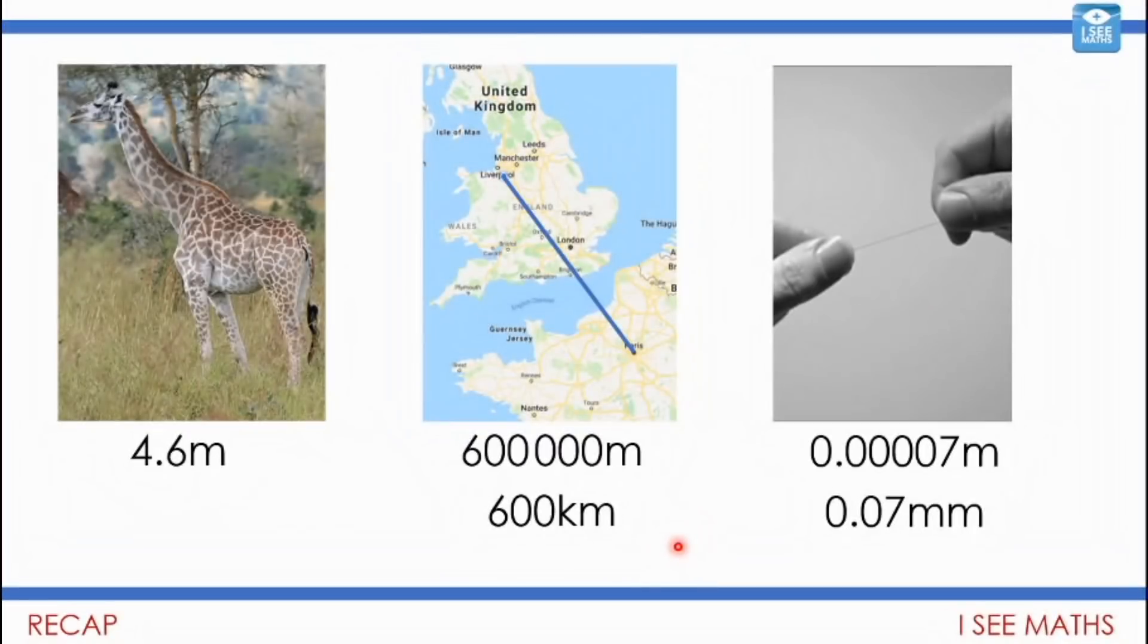So to start off with, just a little bit of a recap from yesterday. We had a look at different things that could be measured. So for example, a giraffe and we were saying 4.6 meters tall. And we were looking at the distance from where I live to Paris, which is 600 kilometers. And we said it's easier to understand that than putting that measure in meters because meters are a bit small to measure a distance that's so long. I need almost a bigger measuring stick there, like a kilometer.